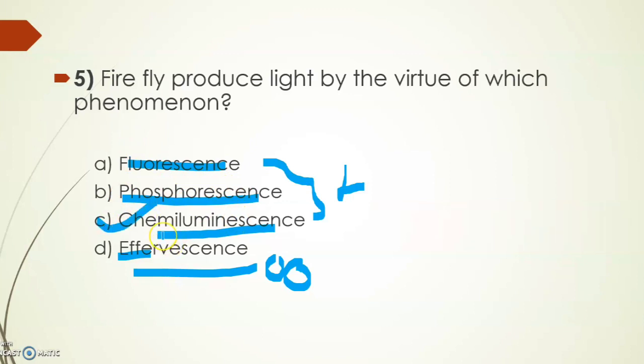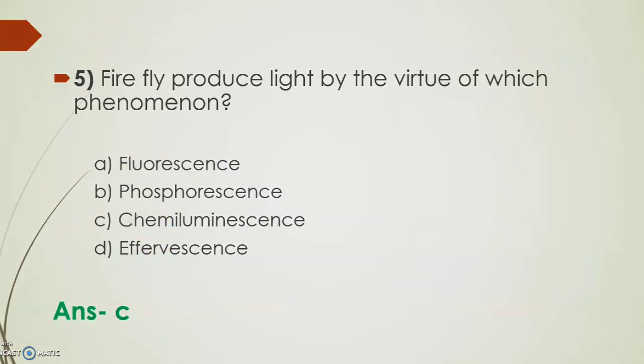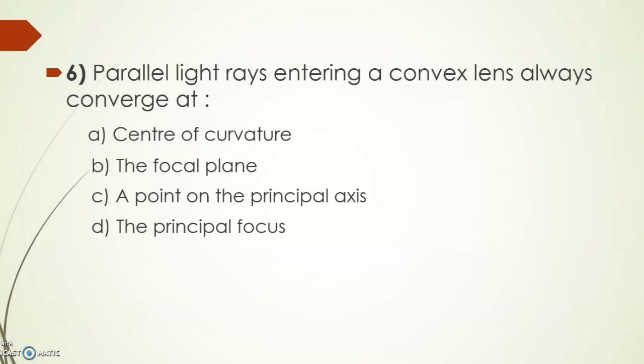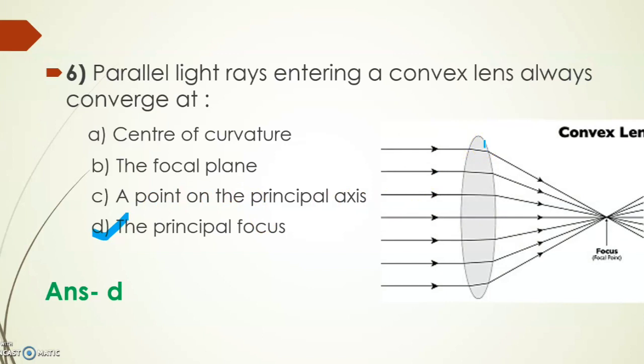Next: parallel light rays entering a convex lens always converge at center of curvature, the focal plane, a point on principal axis, or the principal focus? Its answer is option D, the principal focus. As you can see in this image, this is a convex lens and the parallel rays are coming and they converge at the focus. So parallel rays entering a convex lens converge at the focus.